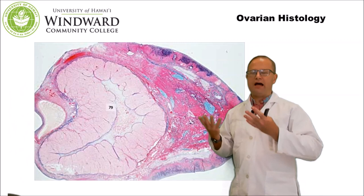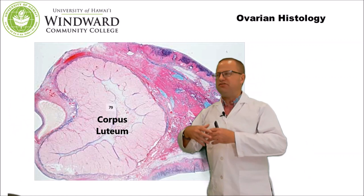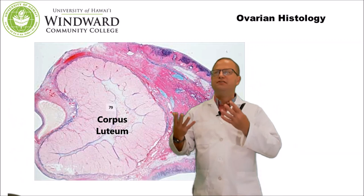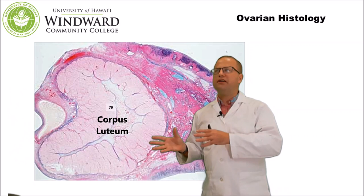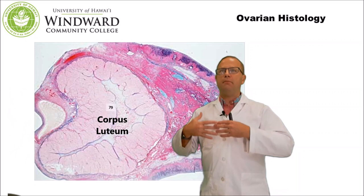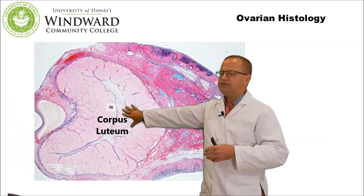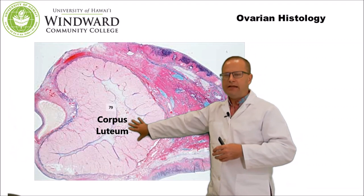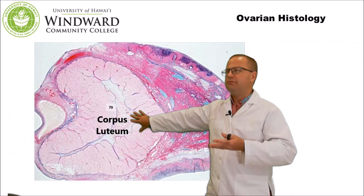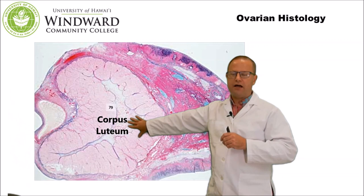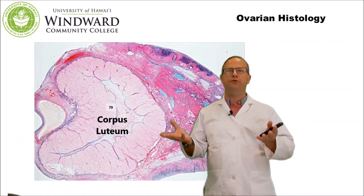Once ovulation occurs, what remains in the ovary is the corpus luteum — the remaining follicular cells that surrounded the antral follicle once the oocyte has been ovulated. These cells transform into the corpus luteum, which now secretes primarily progesterone and a little estrogen. Progesterone helps maintain and thicken the uterine lining for potential embryo implantation. If fertilization occurs, human chorionic gonadotropin from the embryo maintains the corpus luteum for several weeks until the placenta takes over progesterone secretion. Without fertilization, progesterone secretion ceases around day 14, the corpus luteum breaks down into the corpus albicans, and without progesterone, the uterine lining breaks down and menstruation ensues.